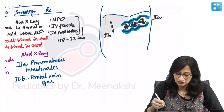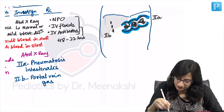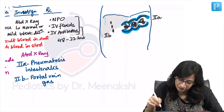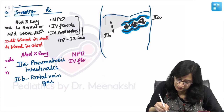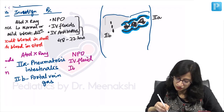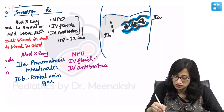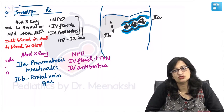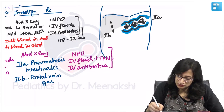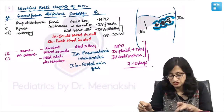The treatment of stage 2 NEC is again NPO, IV fluids, and IV antibiotics, but now you need to give it for 7 to 10 days. Since the baby cannot survive on just IV fluids alone for that duration, you also start TPN — total parenteral nutrition — giving amino acids, lipids, and carbohydrates intravenously. You do this for 7 to 10 days and then reassess.